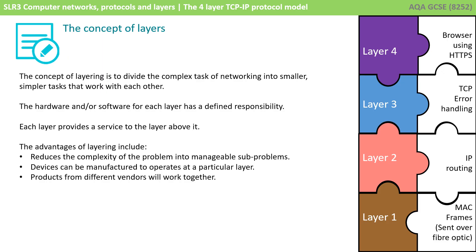Software can be written to handle each task specifically without knowing about other software in the layers higher or lower. For example, layer 2 doesn't care or even need to know about what's going on in the layers above. As long as it receives the data in the correct format, all it has to worry about is routing the traffic using IP. Once it's done this, it can pass the data down to layer 1, which will handle the next stage.